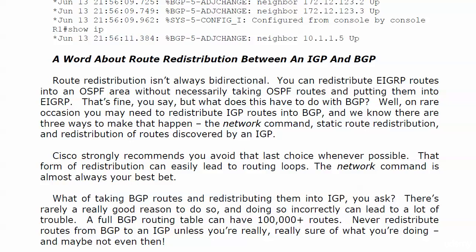What about taking BGP routes and redistributing them into an IGP? There's rarely a good reason to do so. At high levels of BGP administration you may have to, but a full BGP routing table could have 100,000-plus routes. If you just did a simple redistribute — taking all BGP routes and putting them into OSPF — you would have a real mess. There have been real-world problems with that happening. Never redistribute routes from BGP to an IGP unless you're really, really sure of what you're doing — and maybe not even then.